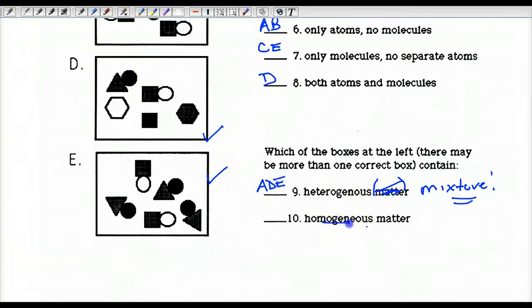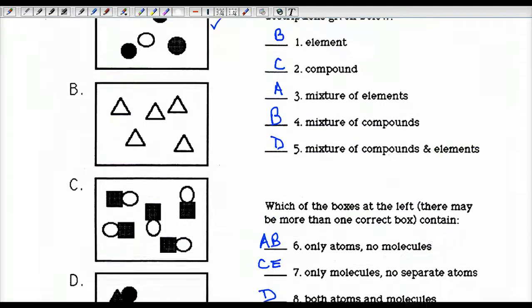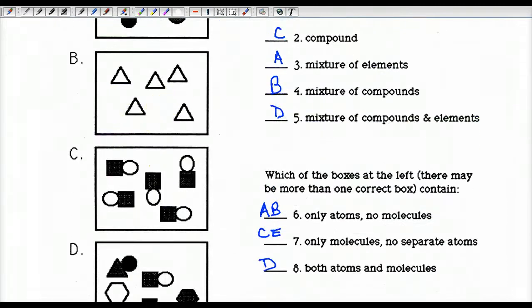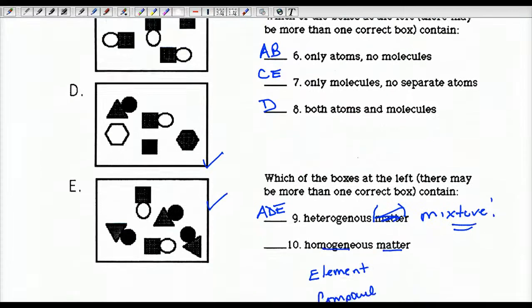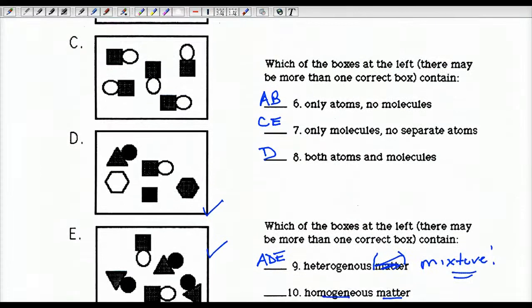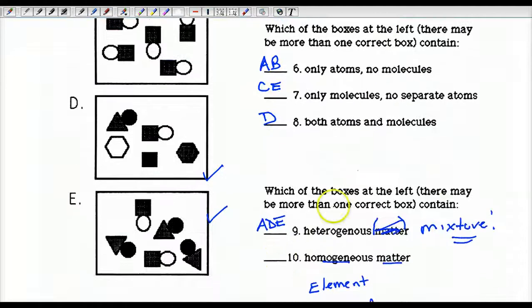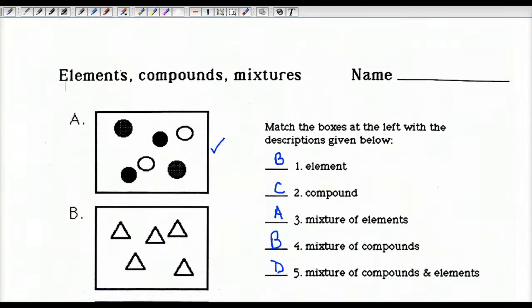And last but not least, the homogeneous matter. That could either be a homogeneous solution, which you can't really draw here. So we either have element, which by the way is a substance. And a compound, which is your other substance. So who's an element and a compound? Well, B is your element. And C is your compound. So B, C. And that completes the ditto. And that's what I wanted to go over today. Hope that really helped. Thanks for listening. We'll see you soon. Bye-bye.